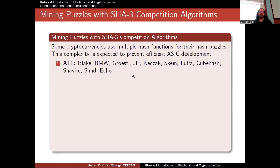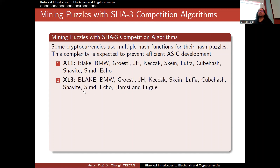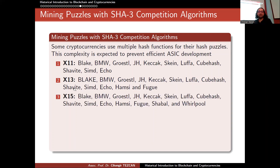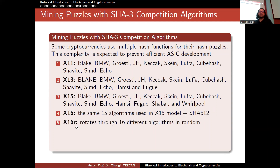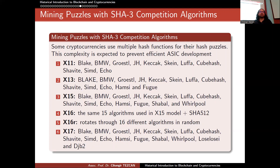Even ASICs were eventually built for X11, so developers escalated further. Instead of 11 algorithms, they tried 13 (X13), then 15 (X15), then 16 (X16). Then came X16R, where instead of using the 16 algorithms in a fixed order, the order changes depending on the block. After that came X17, and so on — all to make providing dedicated mining hardware as difficult as possible. There are a lot of hash functions actually used in cryptocurrencies.